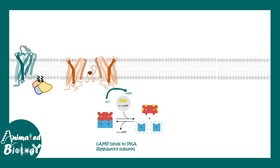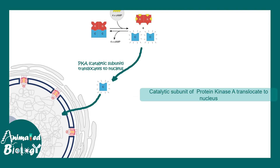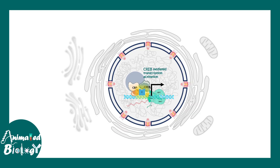Cyclic AMP can bind to protein kinase A (PKA), which has two kinds of subunits: regulatory subunits that bind to cyclic AMP, and catalytic subunits that dissociate upon cyclic AMP binding and can translocate into the nucleus. This catalytic subunit moves to the nucleus, binds to specific regions in the DNA in association with CREB and other proteins, and ultimately recruits transcription factors that allow transcription of several genes involved in the GPCR pathway.